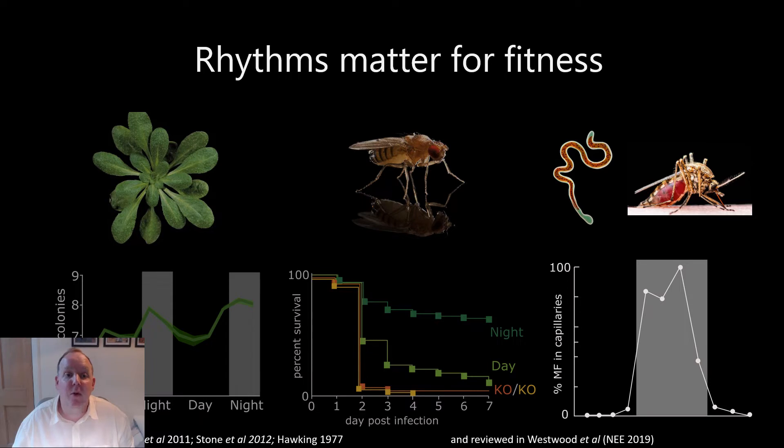But biological rhythms also matter for parasite fitness, such as an example of filarial worms that move from the deep tissues to the capillaries in the skin in a timing that matches the activity of the biting vector, maximizing the parasite's transmission.